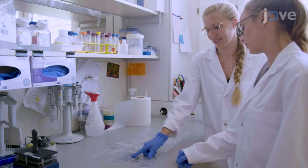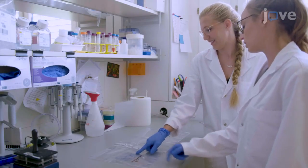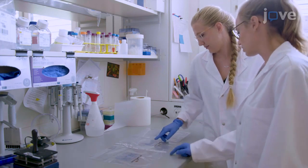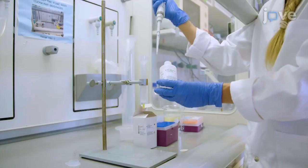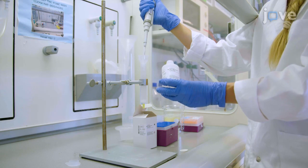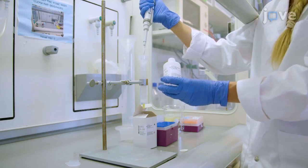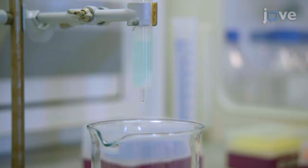Before you start, ensure that all strains overexpress their respective protein well. To begin, prepare the column for the one-pot protein purification as described in the text manuscript, using 2 mL of sepharose resin and then charge the column with nickel sulfate.